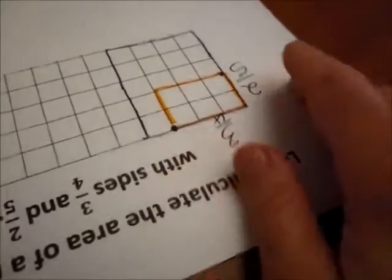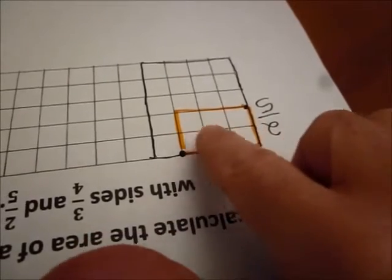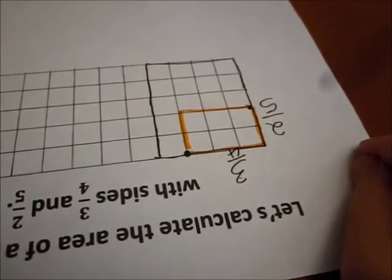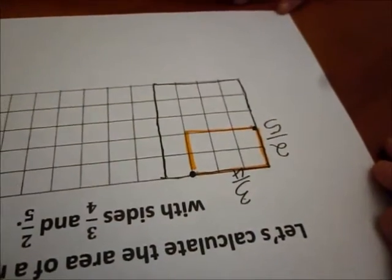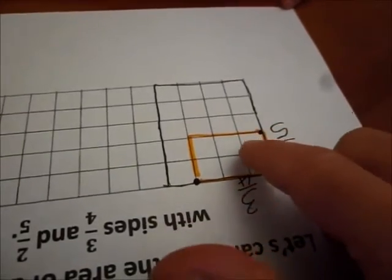Now we want to figure out the area of this rectangle. That's pretty easy to do, right? How many squares are there in there, inside that orange rectangle? Six. And how many did we say were in the whole rectangle? Twenty. So this area...